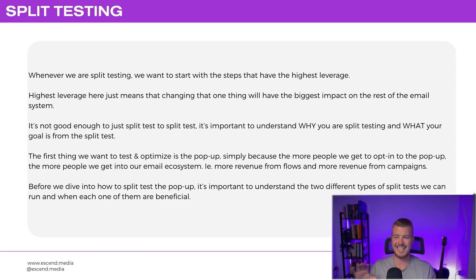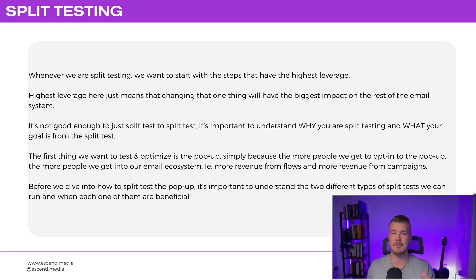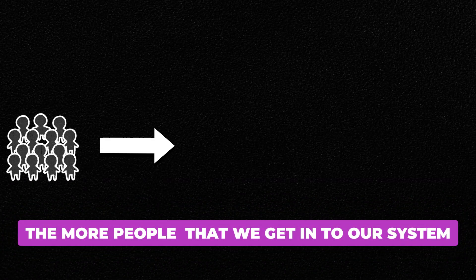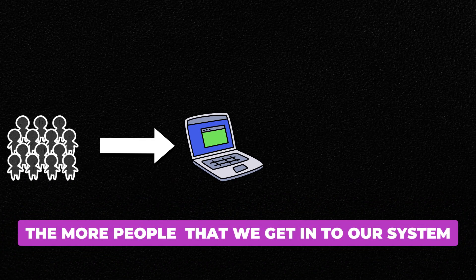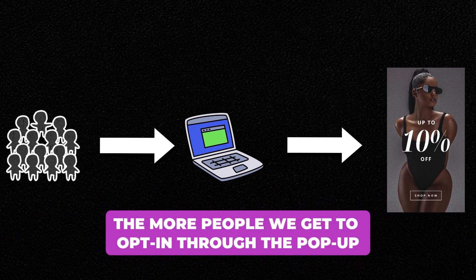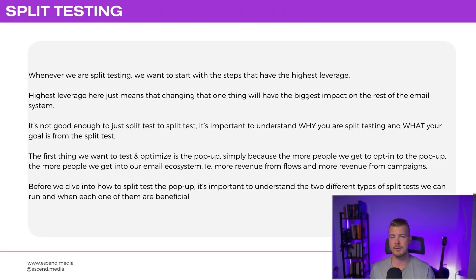The first thing we want to test and optimize almost 100% of the time is the pop-up, simply because the more people we get to opt in through the pop-up, the more people we get into our email ecosystem — meaning more people in flows and more people in campaigns.